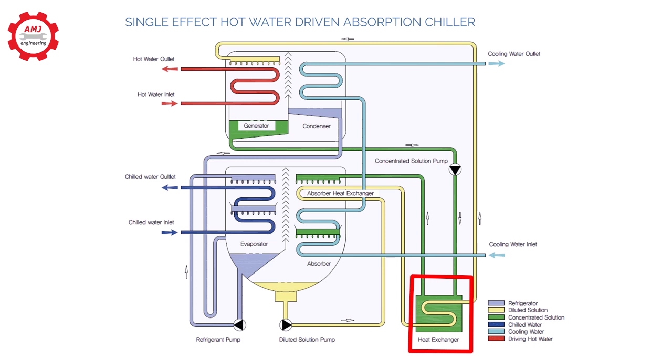Heat exchanger: The heat exchanger transfers heat from the relatively warm concentrated solution being returned from the generator to the absorber and the dilute solution being transferred back to the generator. Transferring heat between the solutions reduces the amount of heat that has to be added in the generator and reduces the amount of heat that has to be rejected from the absorber.